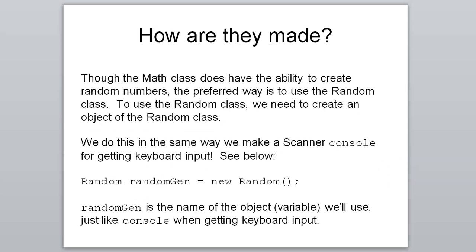So how are we going to make random numbers? Well we're going to use that random class and you'll see a line of code that looks a whole lot like our scanner instantiation where we said scanner console equals new scanner. Well now we say random randomgen equals new random. Random being the class and randomgen being a name that we're giving to our object. You can name this whatever you want. Just like a console could be called a keyboard or whatever you want to throw in there.